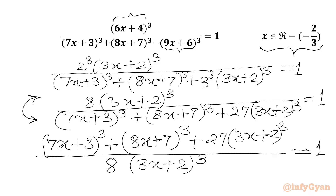Now we will multiply both sides by 8. So let us multiply here with 8 — this side also we will multiply by 8. The 8 and 8 will be cancelled out from our LHS, and RHS will be 8.